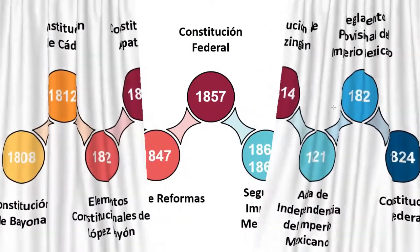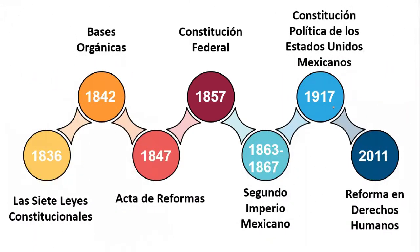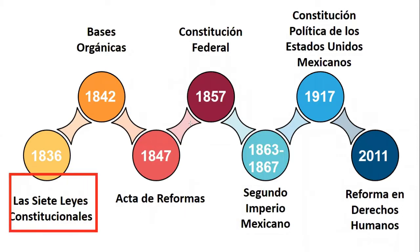Destacamos también otros aspectos históricos importantes como el de 1836, en donde México, después de haber triunfado los centralistas y conservadores frente a los liberales, establece una república de corte centralista, promulgando una constitución llamada las Siete Leyes Constitucionales de 1836, entre las que destaca la creación de un poder denominado el Supremo Poder Conservador.